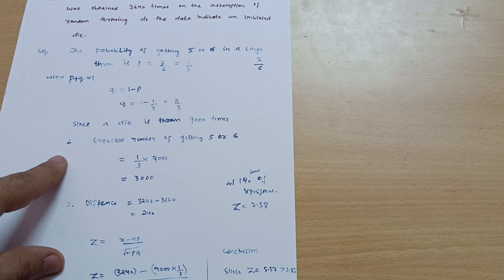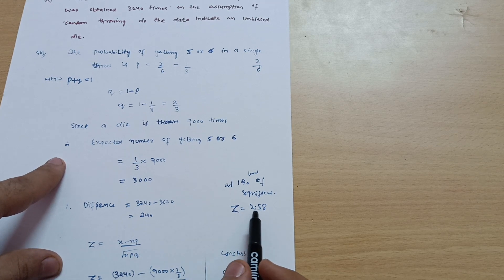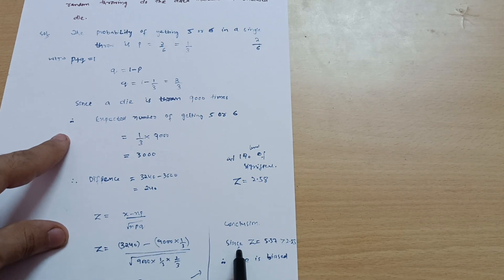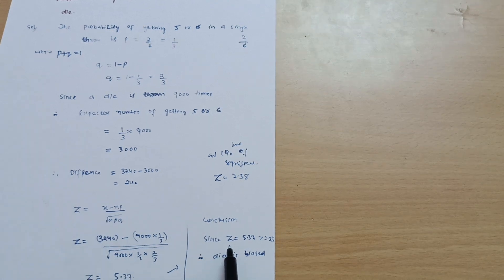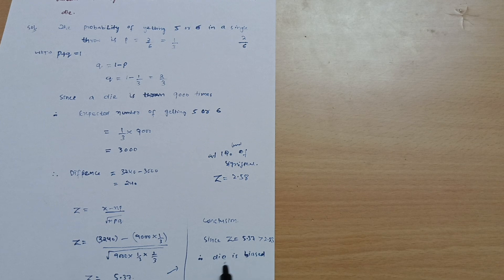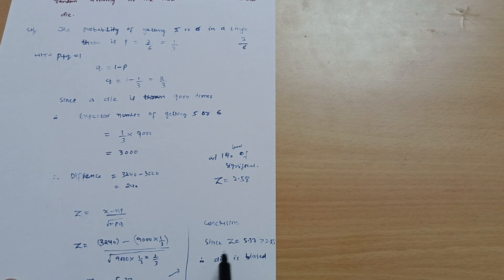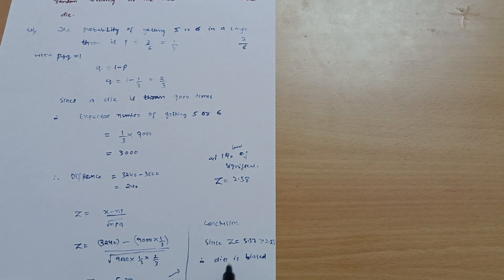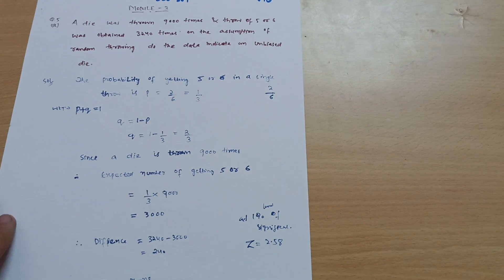The z value is coming 5.37 which is much greater than 2.58. So you can write in the conclusion that since z equals 5.37 is greater than 2.58, therefore the die is biased. If it is less than 2.58 then we can say it is unbiased. I hope this is clear. This is all about this problem, thank you.